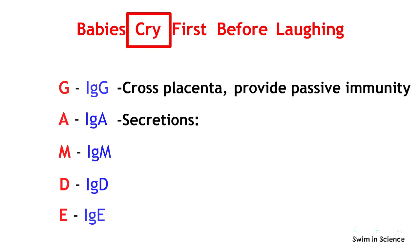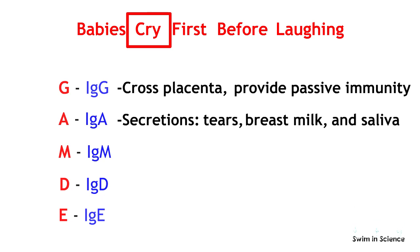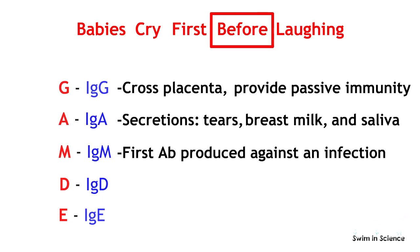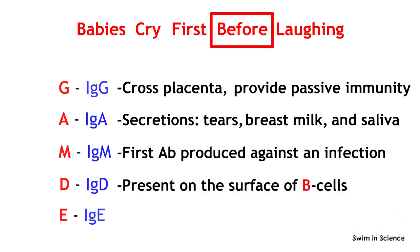The term "cry" indicates that IgA is prevalent in secretions such as tears, breast milk, and saliva. The term "first" is used to indicate that IgM is the first ever antibody produced against an infection. The term "before" is used just to remember the letter B — it is to represent that IgD antibodies are present on the surface of B cells.